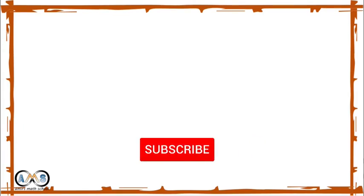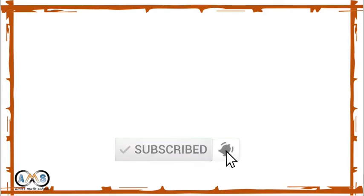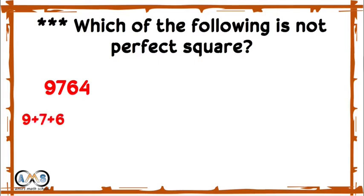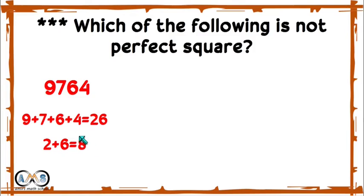We have these 4 steps to check whether any number is a perfect square. Let's apply them. First question: which of the following is not a perfect square? Take 9764 — it ends with 4, so it may be a perfect square. But the digital sum is 9+7+6+4=26, then 2+6=8. Since the digital root is 8, not 1, 4, 7, or 9, this is not a perfect square number.